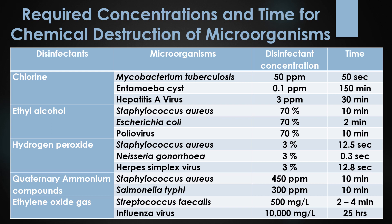The first disinfectant is chlorine. 50 ppm of chlorine is required for the destruction of Mycobacterium tuberculosis and it takes 50 seconds. 0.1 ppm of chlorine is required for the destruction of Entamoeba cyst and it takes 150 minutes.